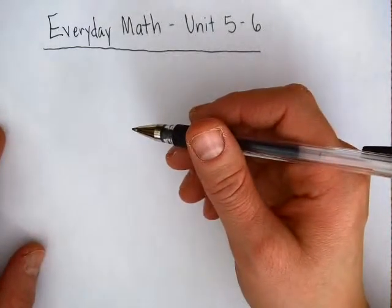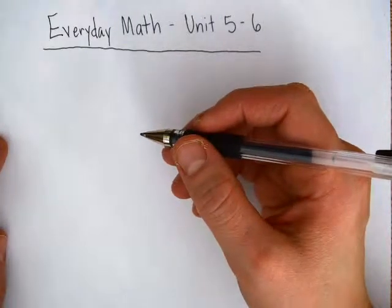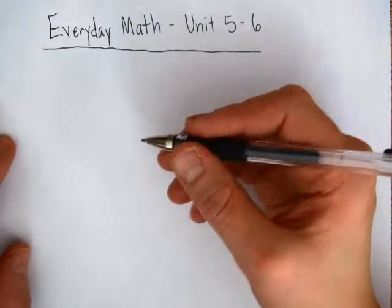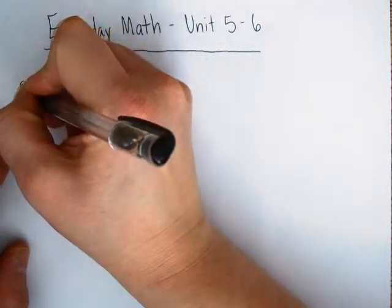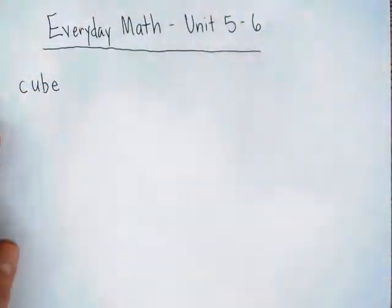So there are four vocabulary words that we're going to want to know about in Unit 5-6 of Everyday Math, exploring estimates and polygons. The first word is cube, and these are words that most of the kiddos have heard before.